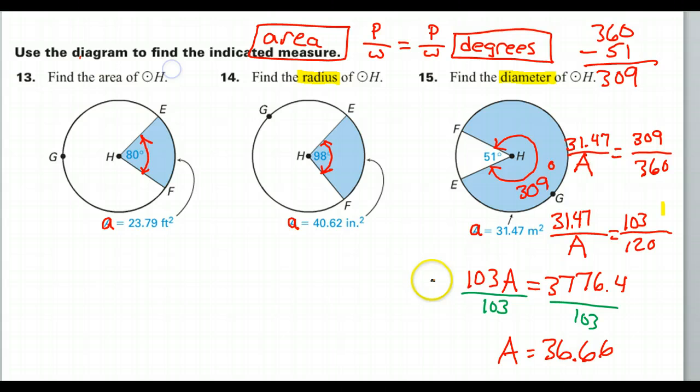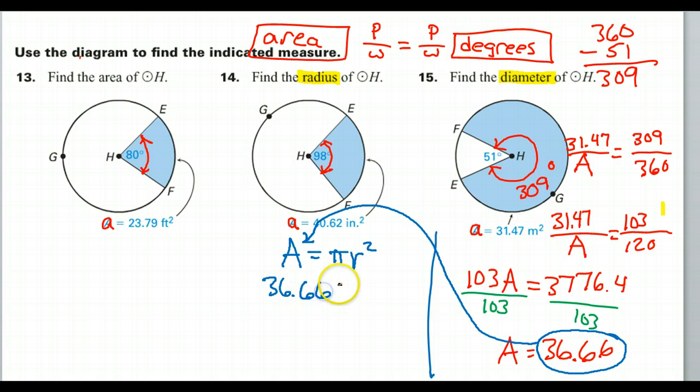So, we have to keep going. So, here's what we do. I'm going to switch to blue. Now that we have the area, we can use the area formula. Area is pi r squared. So, now that I've got this area, I can substitute that into the formula where it belongs. So, this becomes 36.66 equals pi r squared.